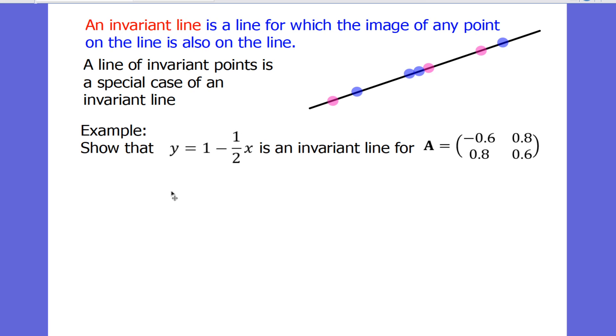These are more difficult problems to solve unless we're given an extra piece of information. Here's an example. You might be asked to show that this is an invariant line for this matrix. What sort of matrix is this? Determinant is -1, it's a reflection.